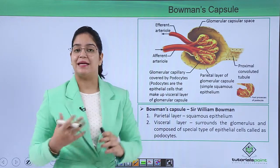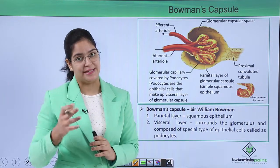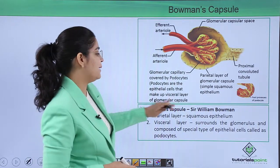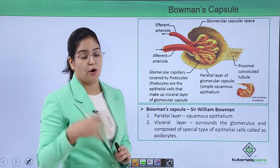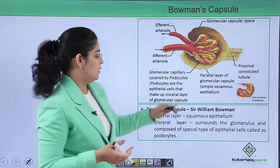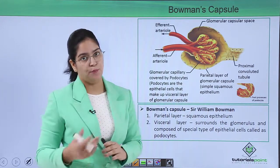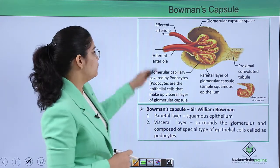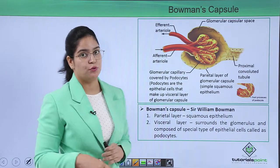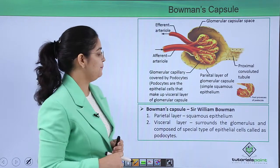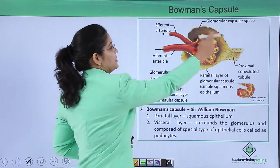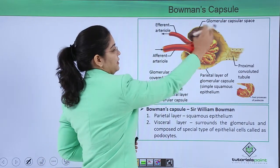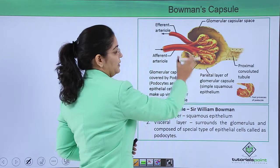First, let's learn why Bowman's capsule is named so. It is named after the scientist Sir William Bowman, who discovered it for the first time. Bowman's capsule has an outer bowl made up of two layers.